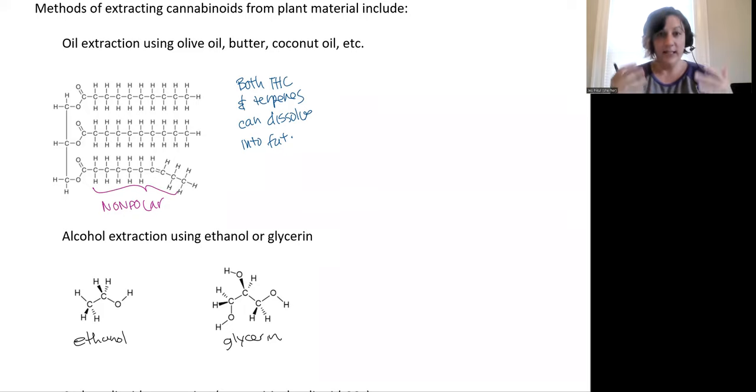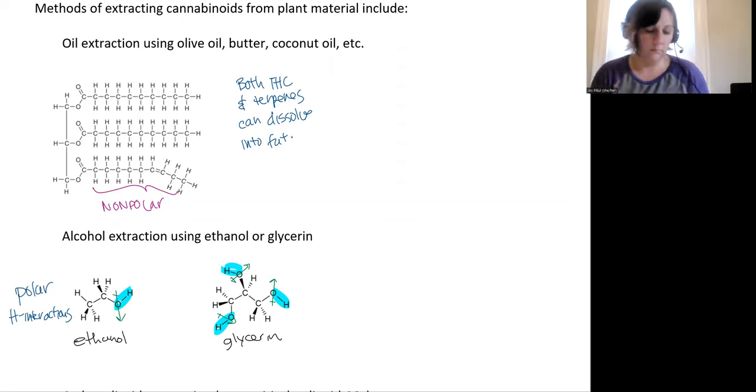And in this case, we'll see extraction out into both of these compounds. However, if we look at these, I noticed that these are both polar and they both have a lot of hydrogen interactions. The ethanol has fewer hydrogen interactions capable because it only has that one OH bond, whereas the glycerin has three of those.